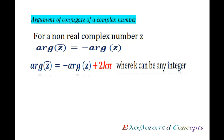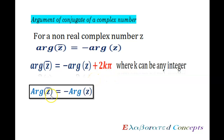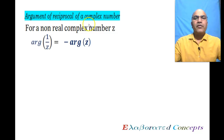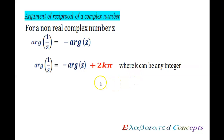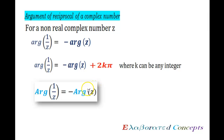So the general case is: argument of z conjugate equals minus argument of z plus 2kπ, where k can be any integer. The principal argument of z conjugate equals minus argument of z. Argument of reciprocal of a complex number: for a non-real complex number z, argument of 1 upon z equals minus argument of z. The general case is argument of 1 upon z equals minus argument of z plus 2kπ, where k can be any integer. And for the principal argument, principal argument of 1 upon z equals minus principal argument of z.